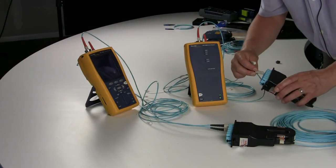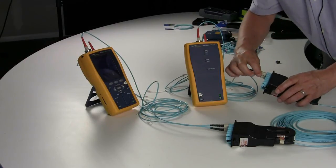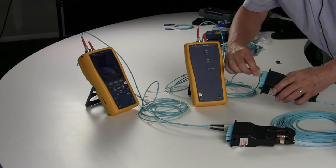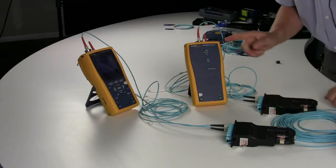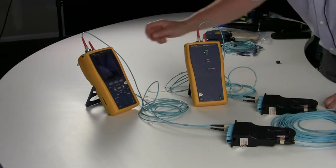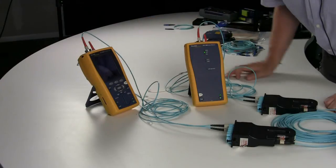You take the other controller, the smart remote, to the other end of the link and you plug it in. And when you hear the chirp, you have connectivity, and then you can go ahead and start testing your link.